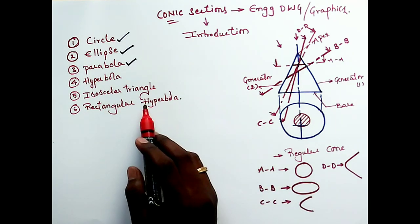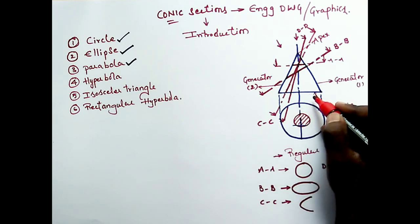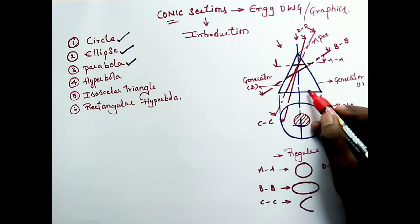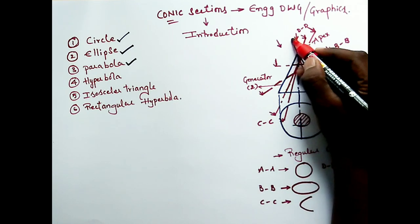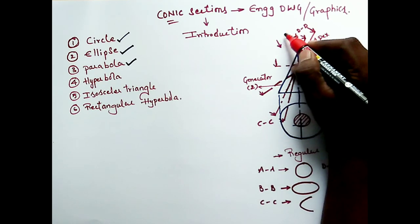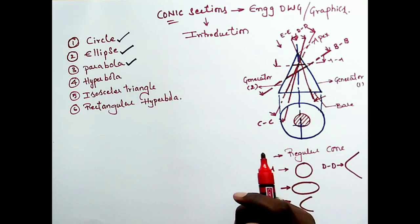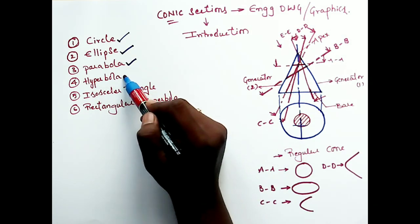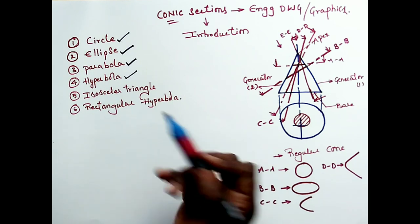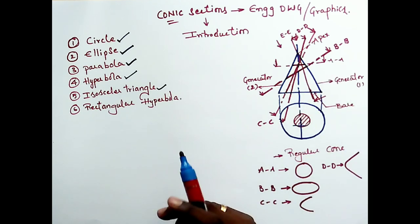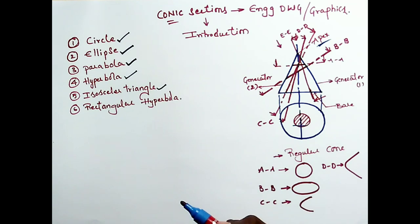For an isosceles triangle: the cutting plane should pass through the base with some inclination and must touch the apex point. Let us call this section EE. If the section passes through the apex point, you will get an isosceles triangle. In academics we are mainly going to deal with ellipse, parabola, and hyperbola — these three are very important. The cutting plane should pass through the base with some inclination and touch the apex point to get an isosceles triangle.